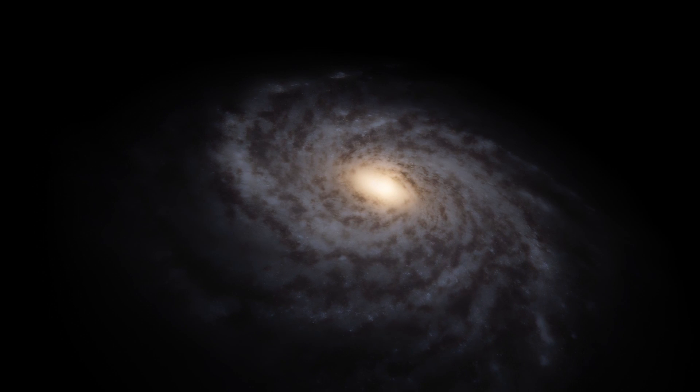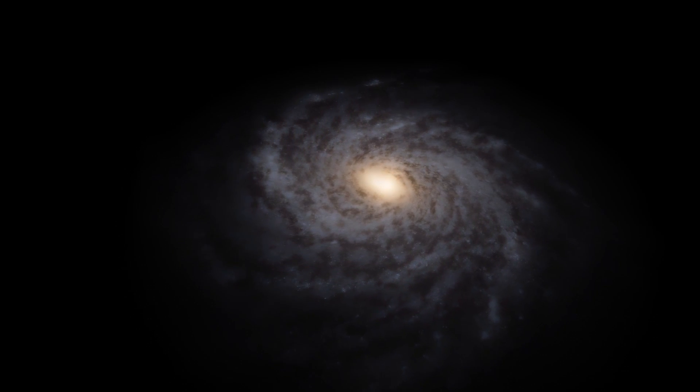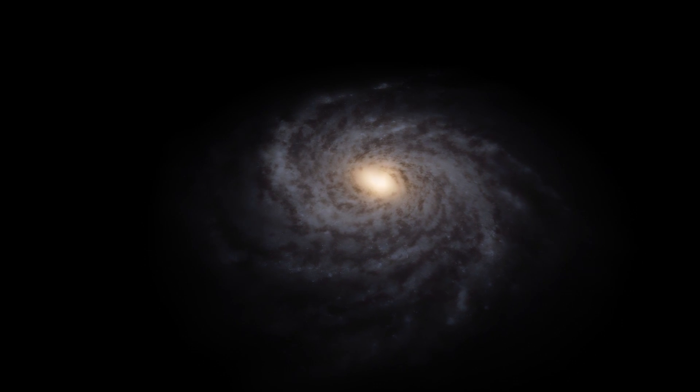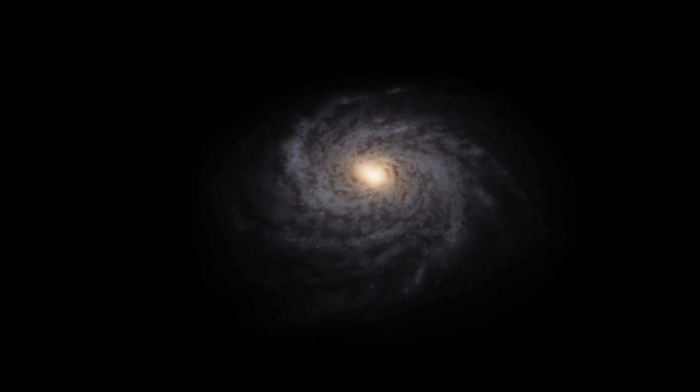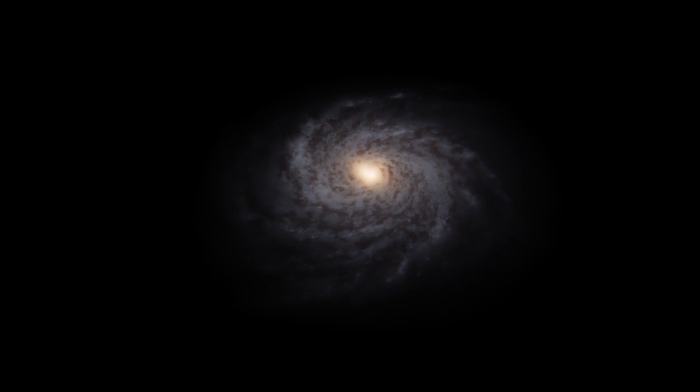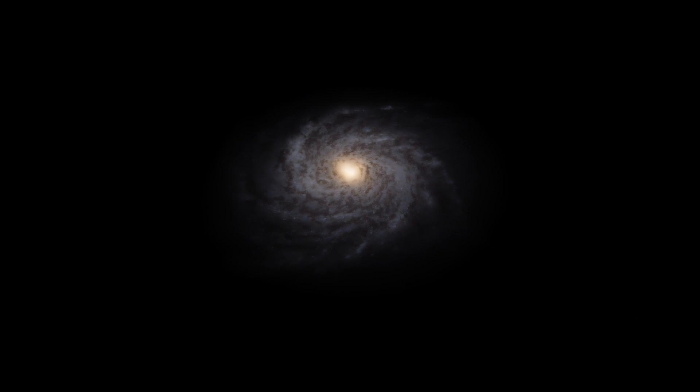None of this makes sense that galaxies like ours can hold together or spin the way they do. These supermassive black holes, for example, aren't enough to hold all the stars together. When you combine all these peculiarities, the simplest explanation is that dark matter must exist, and there must be a lot of it.